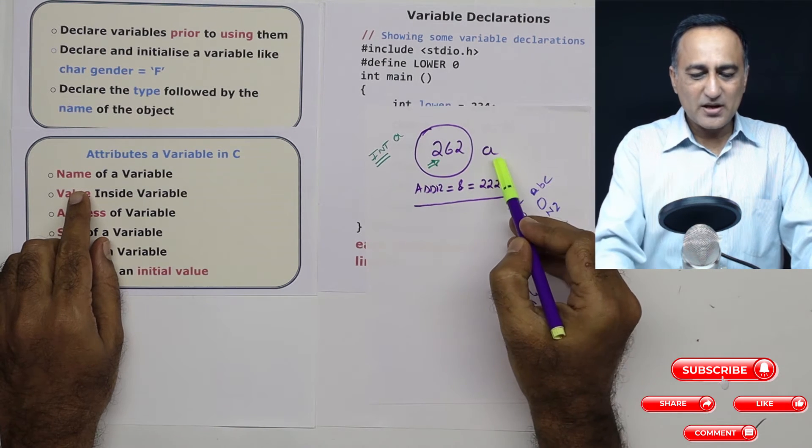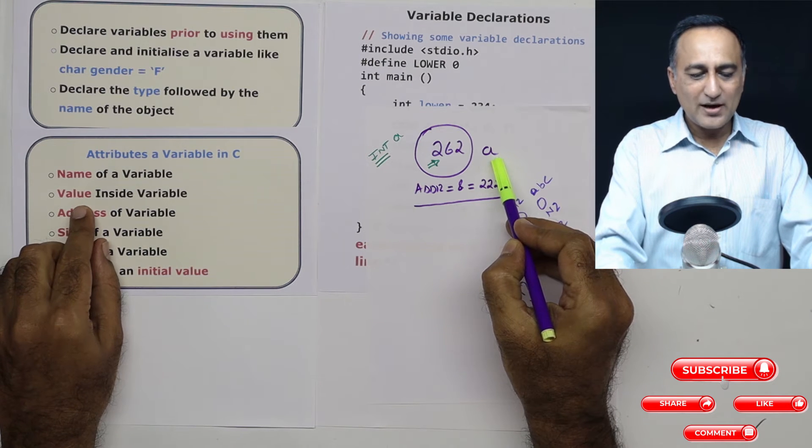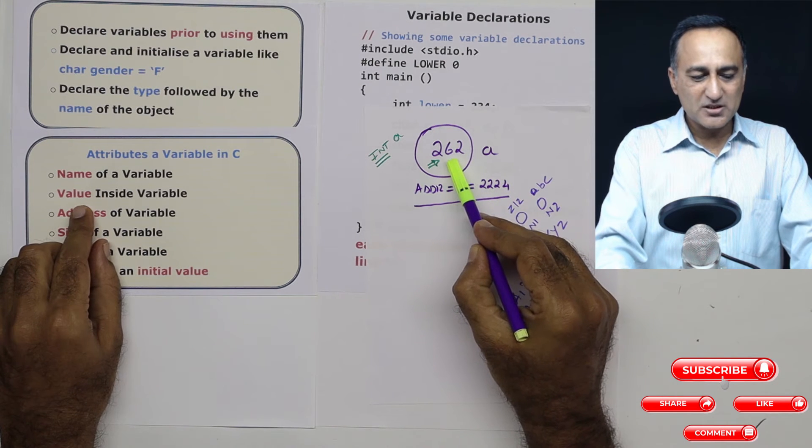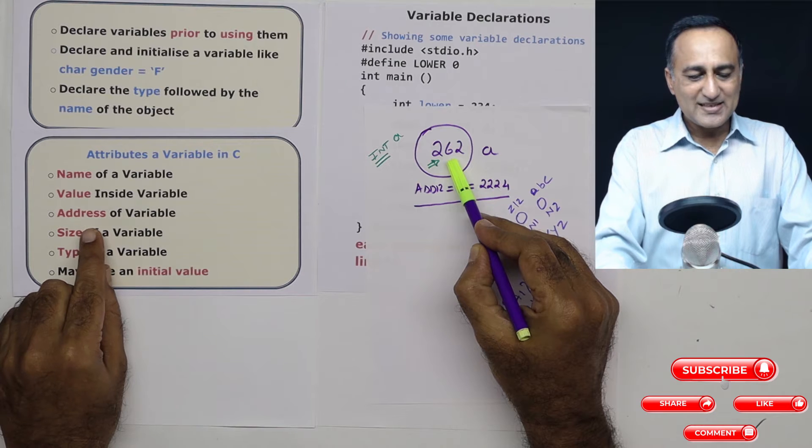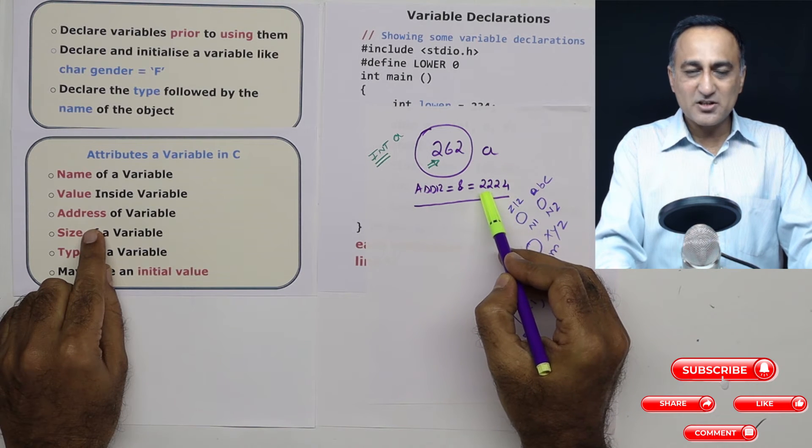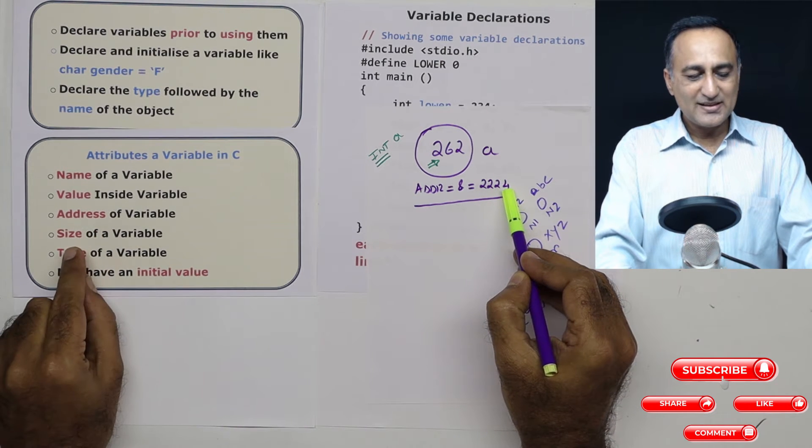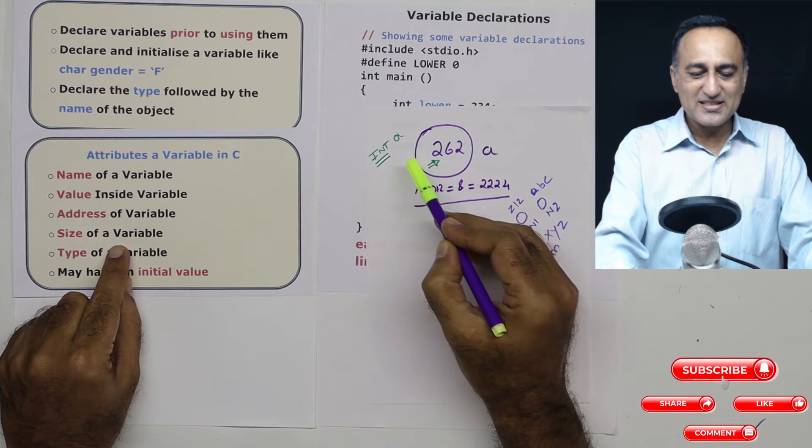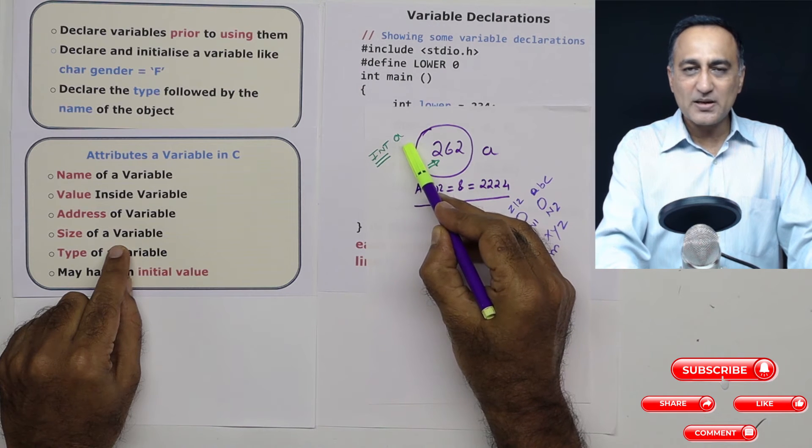First thing is the variable has a name. So it is a, there is a value inside a variable happens to be 262. There is address of a variable in this case, I've just assumed it is 2224. Then there is a size of a variable since it's assuming a to be an integer type of variable.